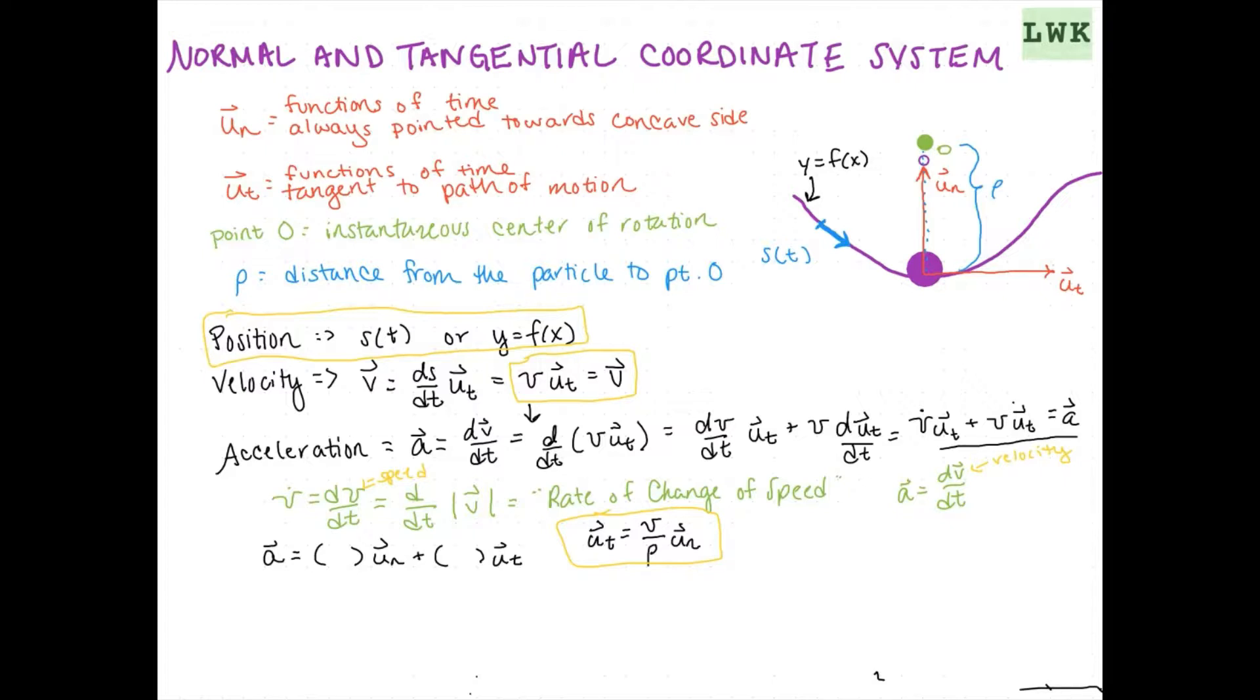And we're going to write A equals V dot again times ut. So here we have our equation for acceleration that has a normal and tangential component. We're going to give us a little more room.